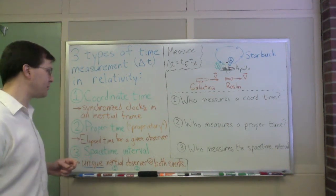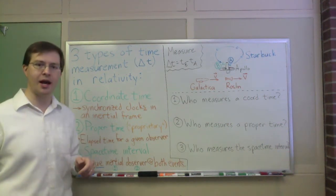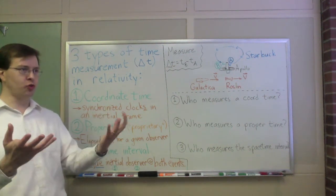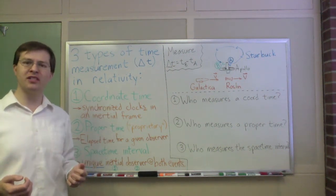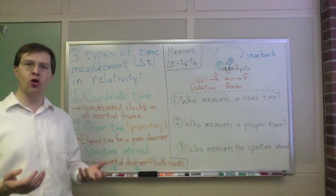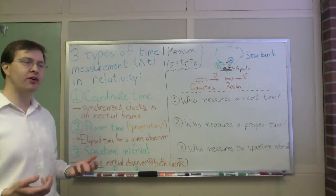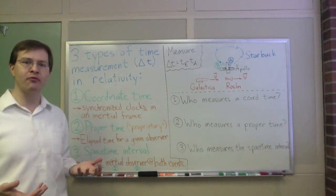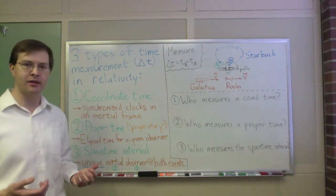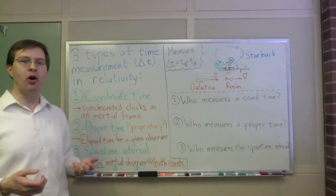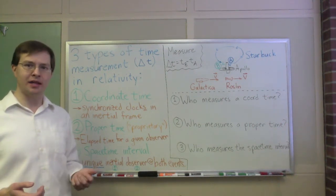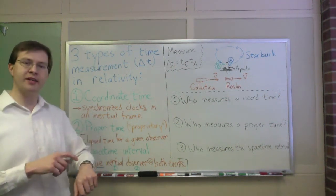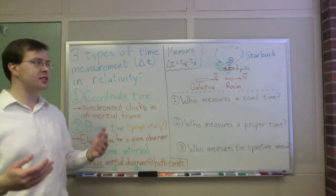The second type of time we talk about in relativity is proper time. And just to emphasize this, as other books do, proper here doesn't mean true or correct. What proper means is more like proprietary. Each observer has their own proper time. Every observer measures time, so it's the elapsed time for a given observer. So if I'm present at event A, and then I am also present at event B, then if I just note down the time on my watch at each one of those two events, the difference is the proper time.